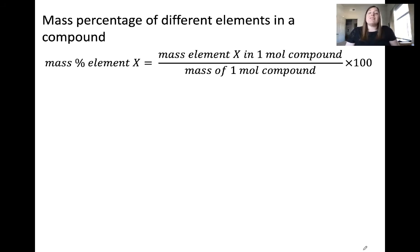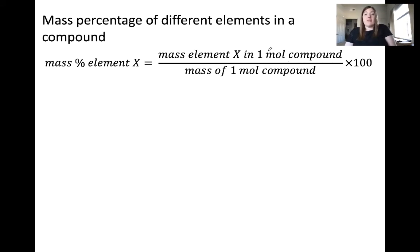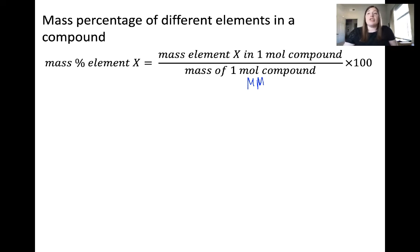Mass percentage is a different way to classify the composition of a compound. We calculate the mass percentage by taking the mass of one of the elements in a mole of a compound and dividing by the mass of one mole of the compound — also known as the molar mass (mm). Once we calculate that ratio, we then multiply by 100.